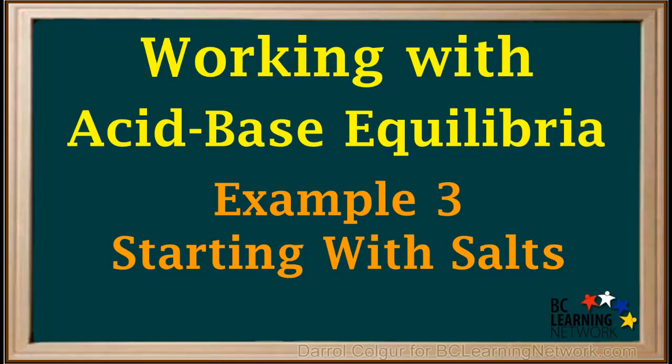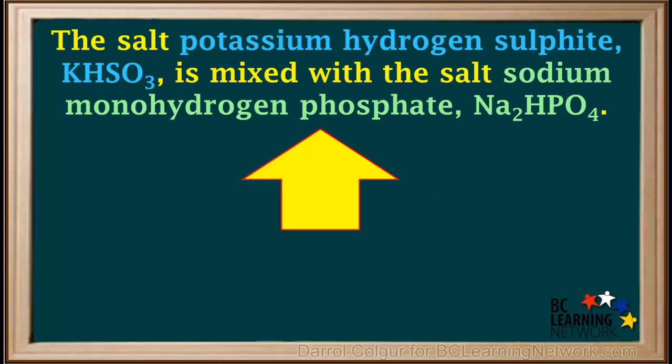Here we'll examine the acid-base equilibrium that results when we mix two salts that have amphiprotic anions. We're given that the salt potassium hydrogen sulfite, KHSO₃, is mixed with the salt sodium monohydrogen phosphate, Na₂HPO₄, and we're asked to complete the equation for the equilibrium that is established.